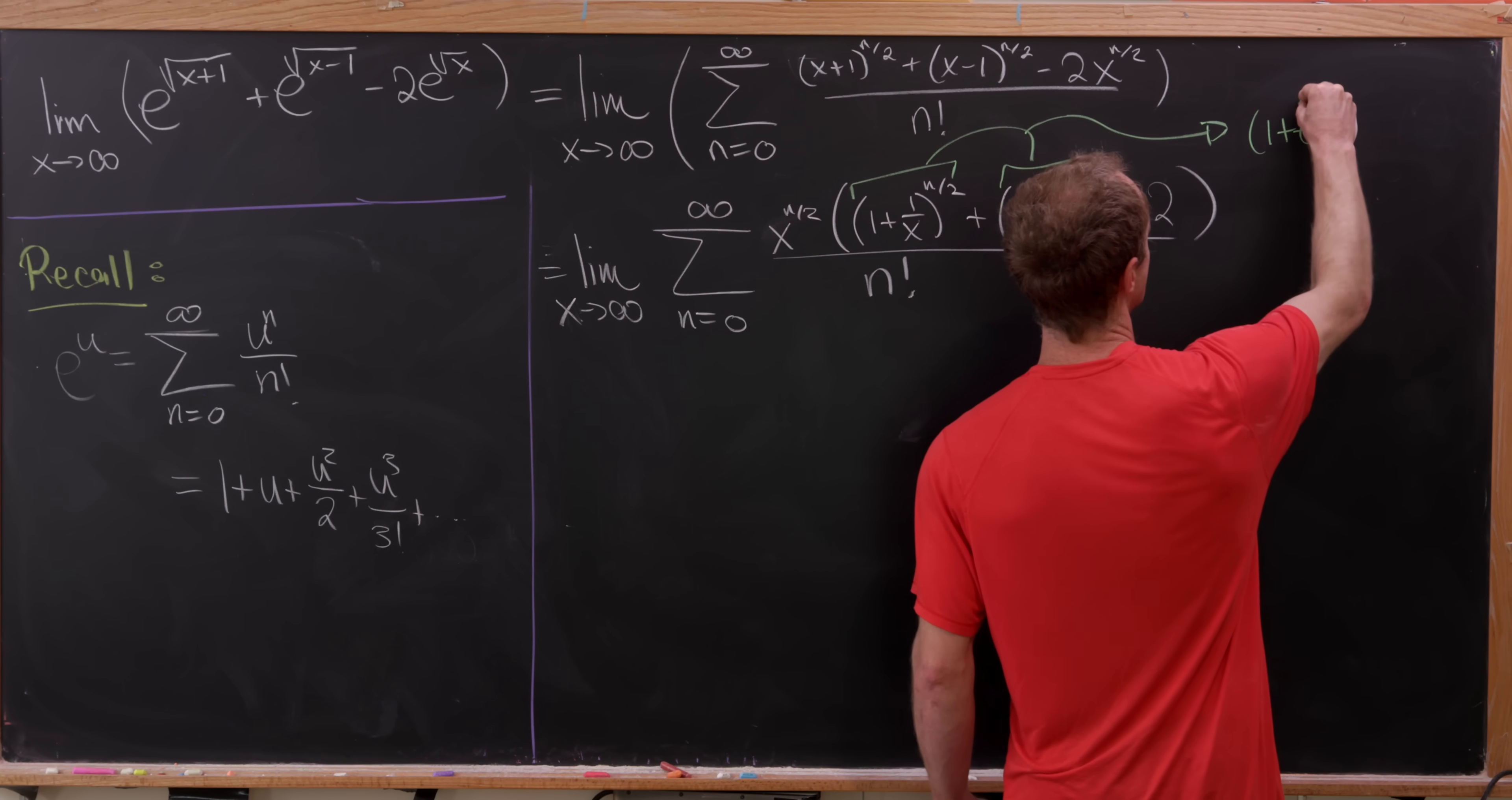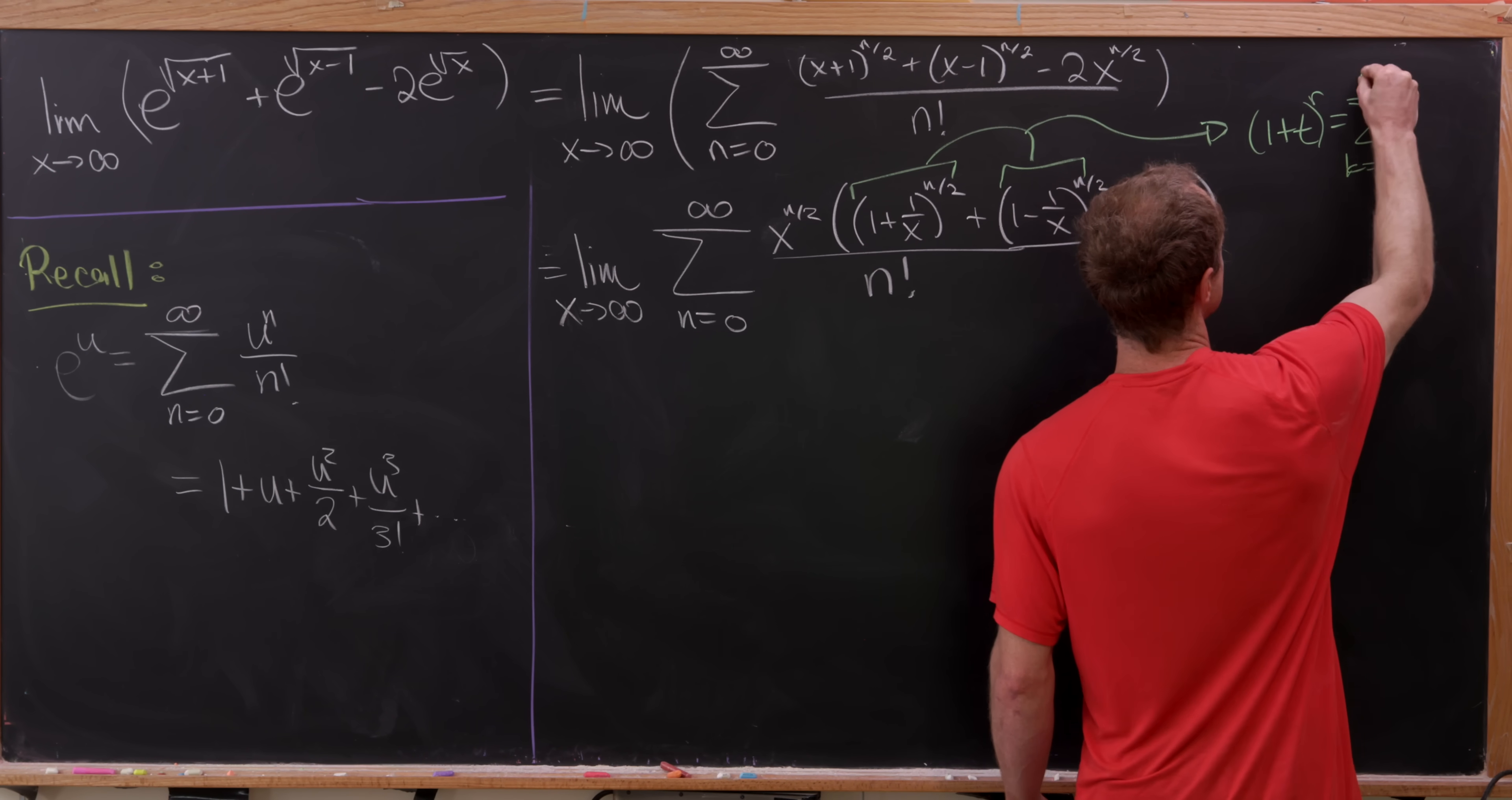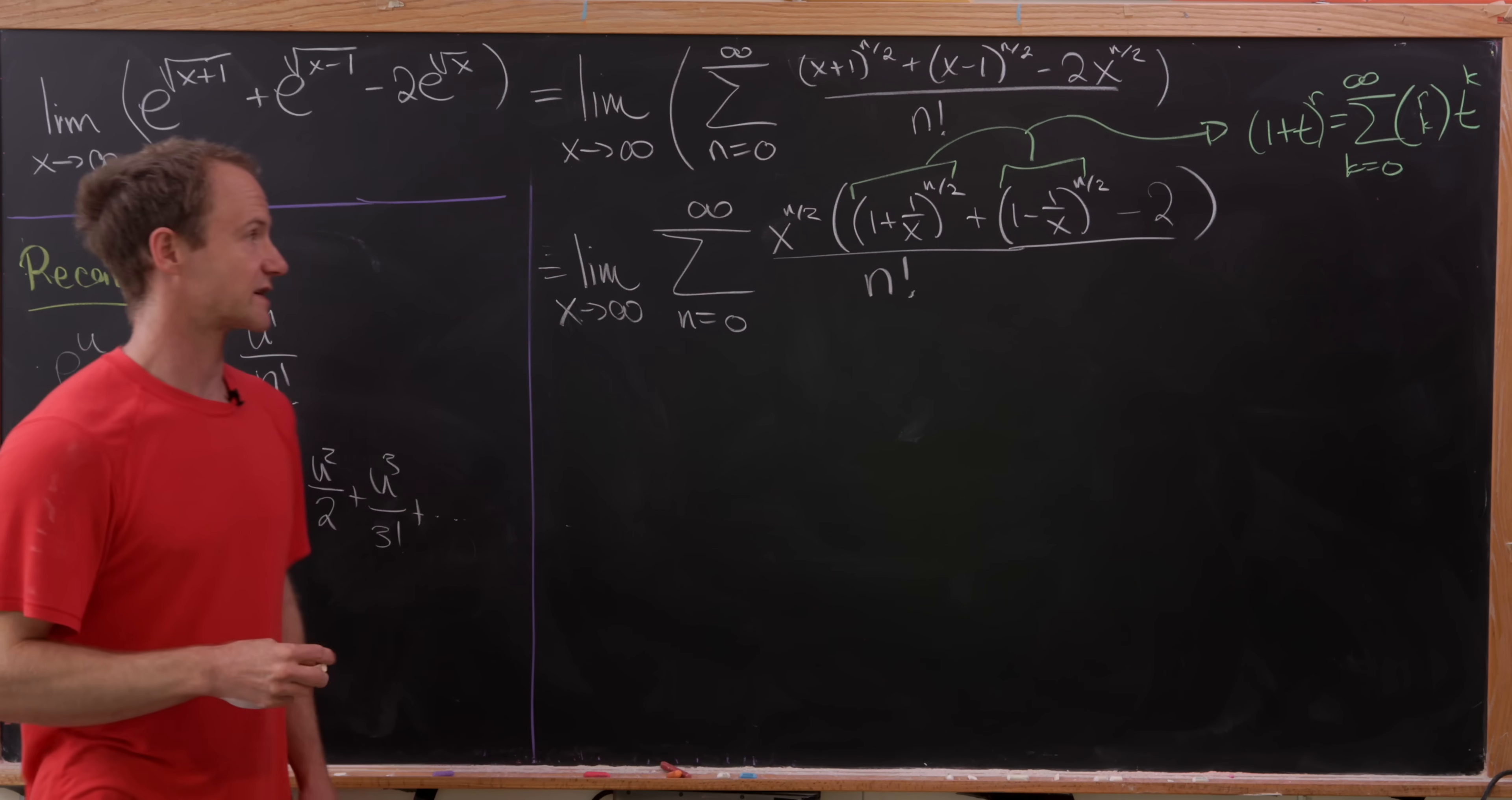Which let's recall it says 1 plus t raised to the r power is the sum as k goes from 0 to infinity of r choose k, t to the k. And that's where r is really any complex number.